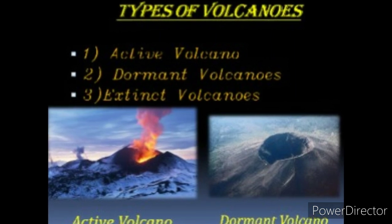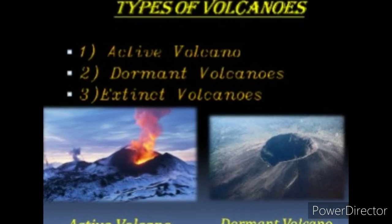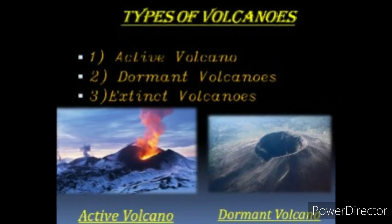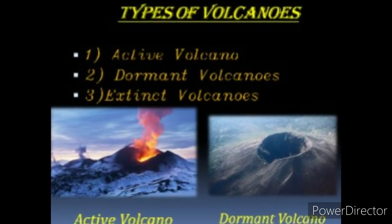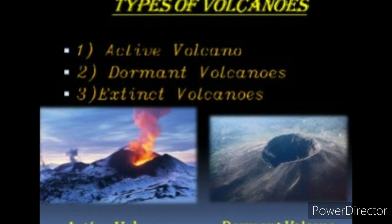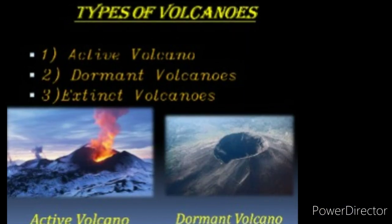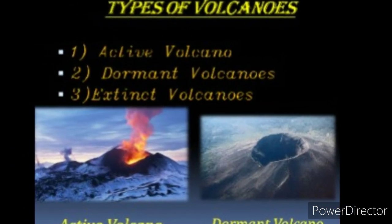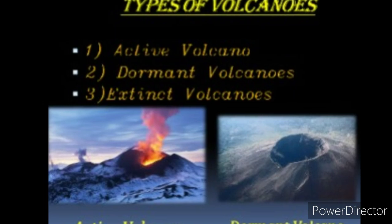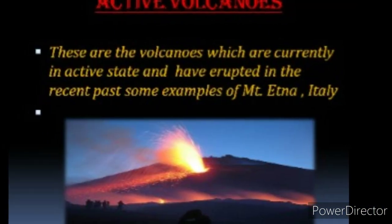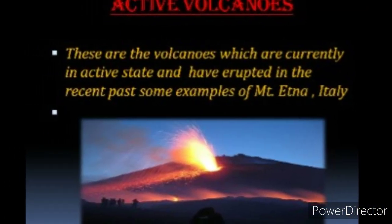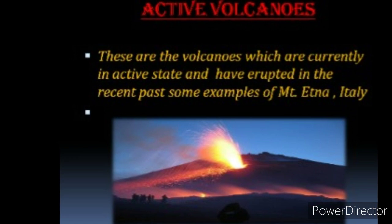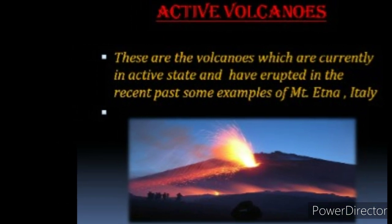Now we will see the types of volcano. There are usually three types: active volcanoes, dormant volcanoes, and extinct volcanoes. Active volcanoes are those which are presently in an active state and can become active at any time.